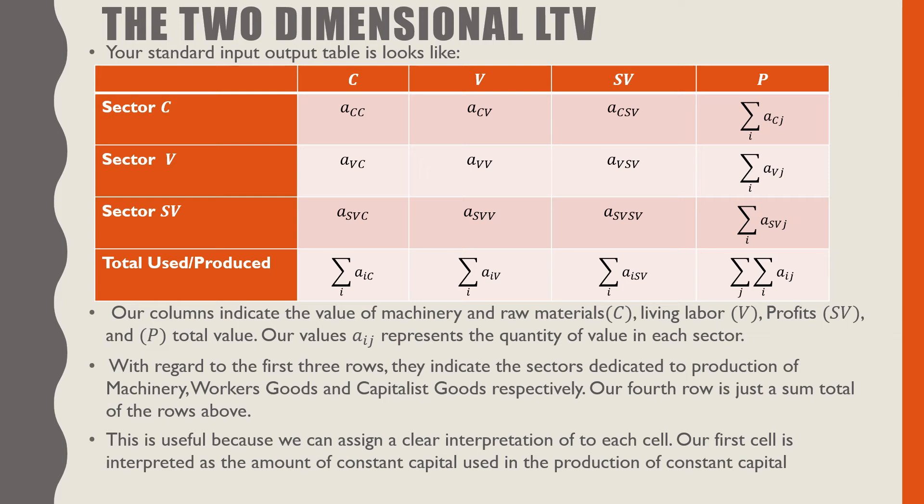If we were to look at sector C for V, we look at the amount of labor value that is used in the production of constant capital. What you have is the factories that the workers go to, and then you have the input that goes to each factory to produce those inputs themselves.